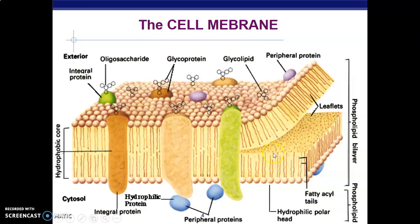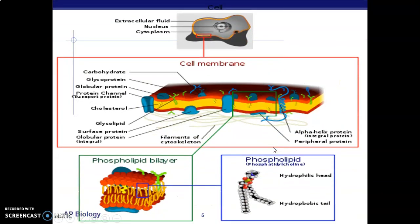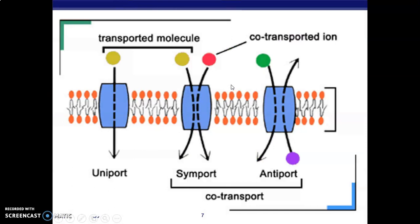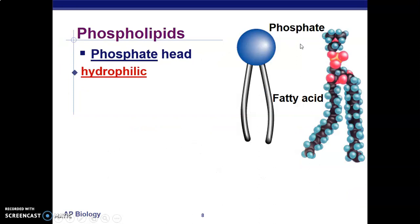The cell membrane mainly contains proteins and lipids. We have different types of transport mechanisms: uniport, where one substance is transported across the membrane; symport, where two substances are transported together; and antiport, where one substance comes in and another exits the cell.